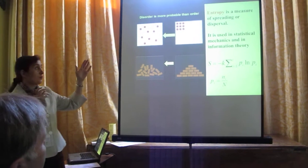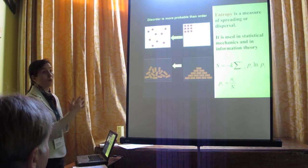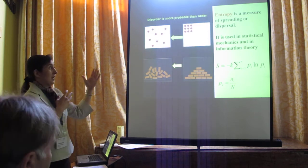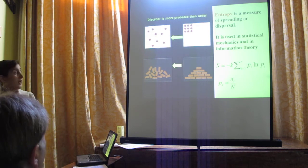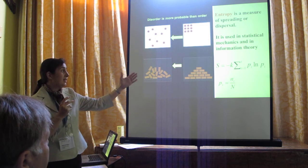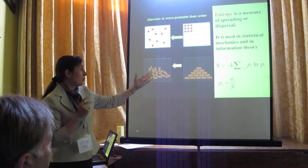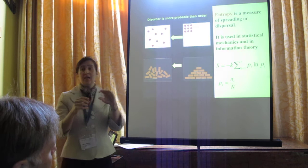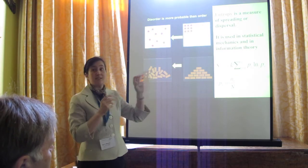We can relate those distributions to entropy, and through entropy to energy. Entropy is used in statistical mechanics and information theory. At the probability distribution level, entropy is a measure of spreading or dispersal, and you can calculate it based on the Gibbs formula: S is the entropy, K is the arbitrary constant, PI is the probability of a street in a certain bin, LN is the natural logarithm, and T is the number of bins.